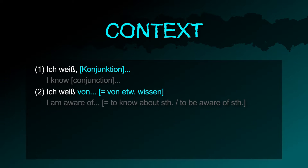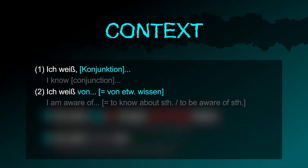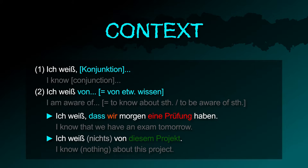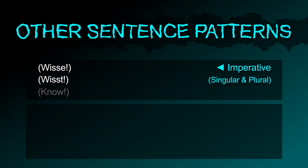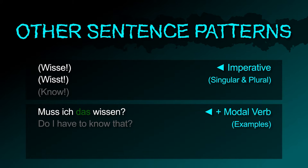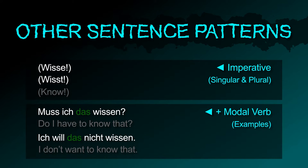For context, you will usually have to use a conjunction to connect another sentence. If you add the preposition von, it simply means that you know about something. Examples: ich weiß, dass wir morgen eine Prüfung haben; ich weiß nichts von diesem Projekt. Imperative: wisse, wisst. Adding a modal verb: muss ich das wissen? Ich will das nicht wissen.